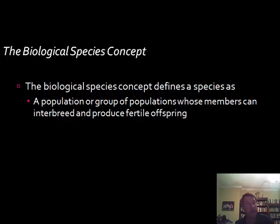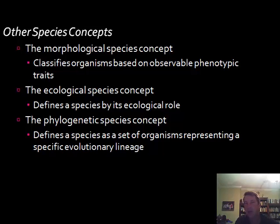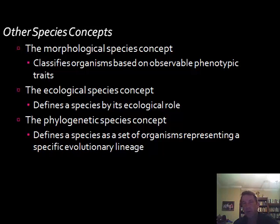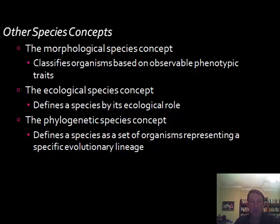Also, with extinct animals like dinosaurs, when we examine fossils and bones, we don't know anything about breeding ability or producing fertile offspring, so that definition is problematic. Because of these limitations, biologists have set up different types of concepts for grouping and naming species: morphological (physical characteristics), ecological (role in the ecosystem — producer, consumer, decomposer, and position in the food chain), and phylogenetic (making inferences about lineage and relationships between species).